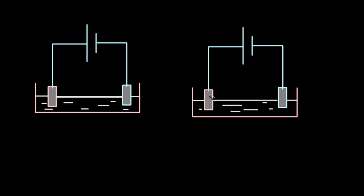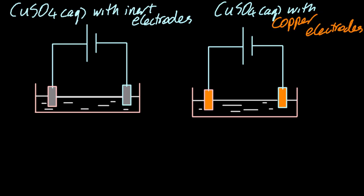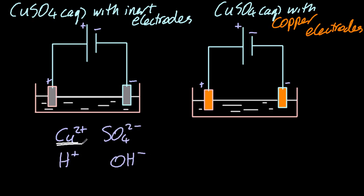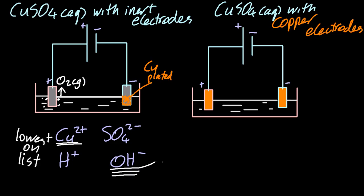Let's look at copper sulfate with inert electrodes, such as graphite or platinum, and copper sulfate with copper electrodes which are not inert. For the inert case: Cu²⁺ is lowest on the list, so it is preferentially discharged at the negative electrode — copper is plated on. At the positive electrode, OH⁻ makes oxygen gas, which is released.